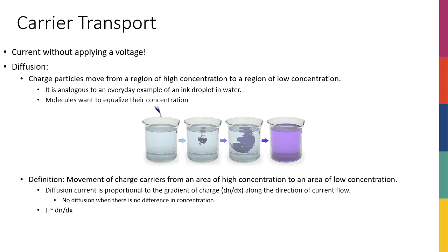So the second carrier transport mechanism is called diffusion. Unlike drift, which is really something that we have seen before because we know that if you have any piece of conductor or semiconductor, if you apply voltage across it, there's going to be some current. Maybe we don't know the exact amount of current. For a conductor, V equals RI. And for semiconductor, we just realized that it's a weird relationship.